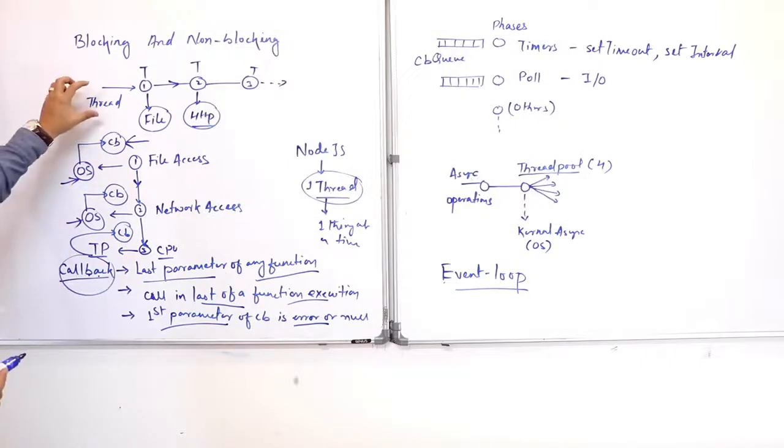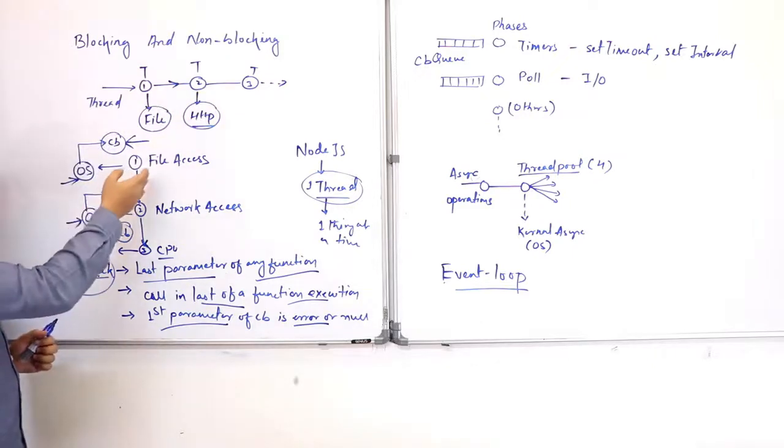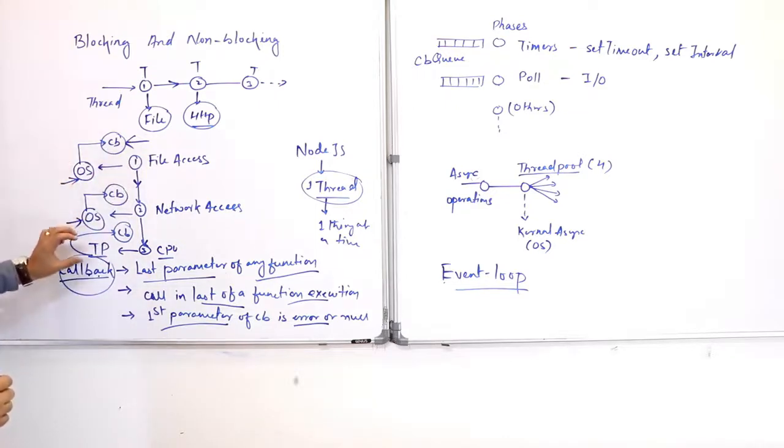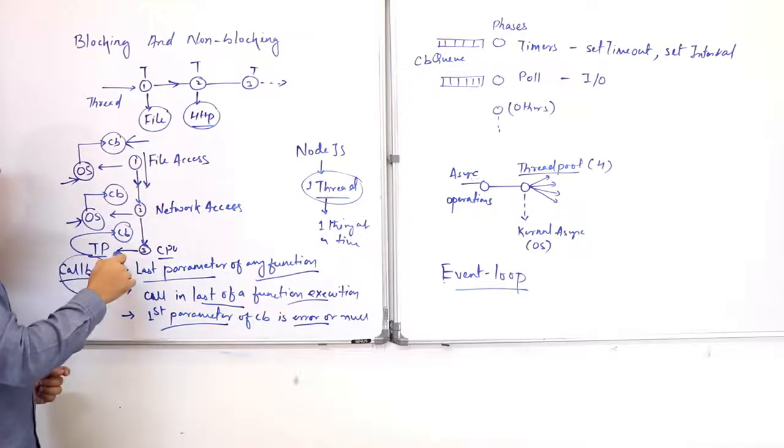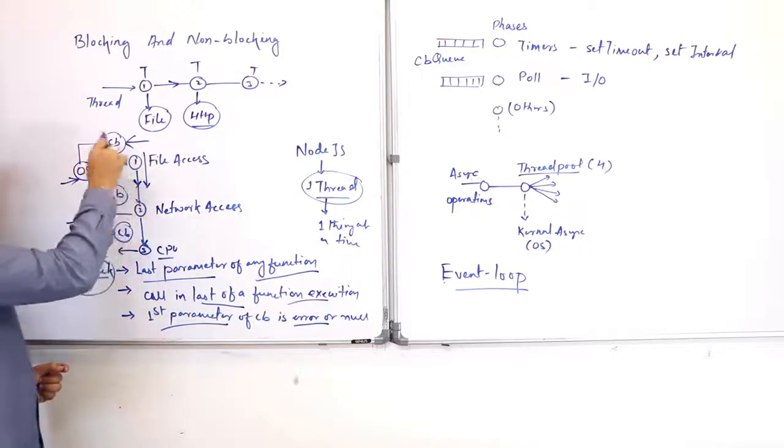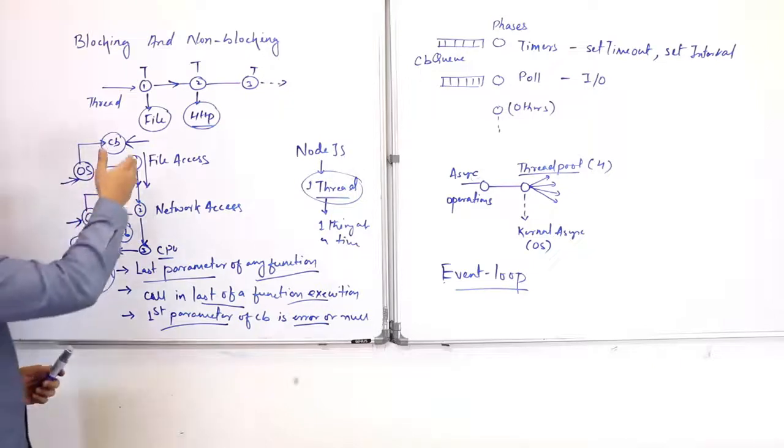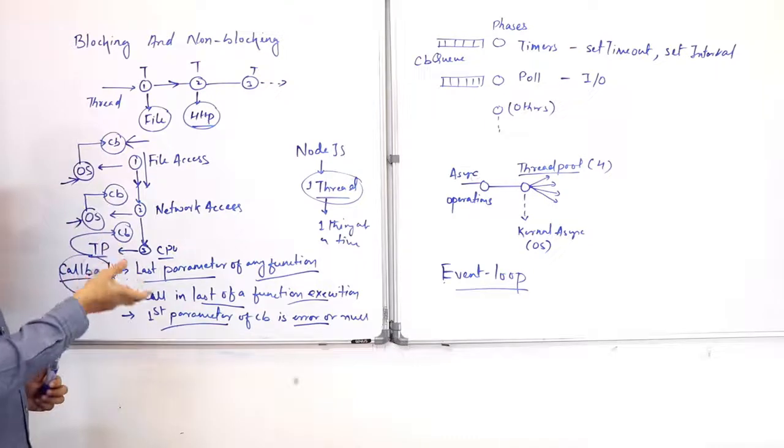So now we understood that a single thread was being blocked by operations. By design, we overloaded the task—we provided the task to the OS or the thread pool—and then we get a callback. So that your thread, your main thread, you can call it, is free to enqueue the task, and it gets a callback when the task is completed in a different thread. So now this process makes your NodeJS very efficient, and the design of how this will happen is actually your event loop. Event loop is designed such that this operation is very efficient.